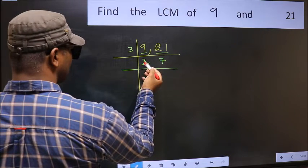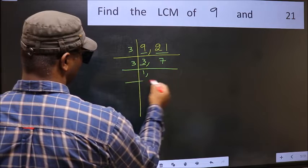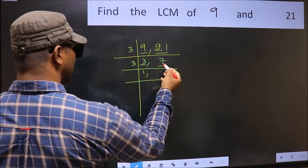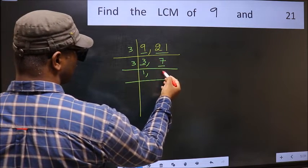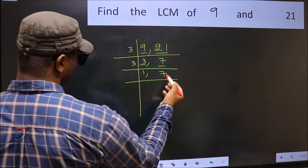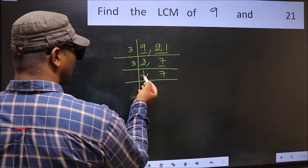Now here we have 3. 3 is a prime number so 3 times 1 is 3. The other number 7 not divisible by 3, so you write it down as it is. Now we got 1 here.